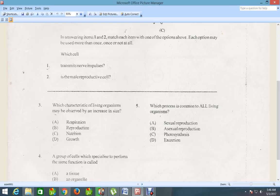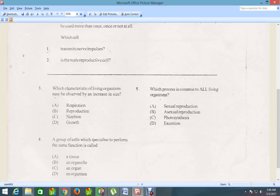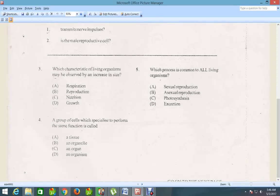Question number 4, a group of cells which specialize to perform the same function is called a tissue. So cells normally group together to form tissue, while tissues normally group together to of course form an organ.